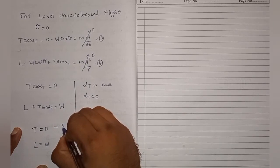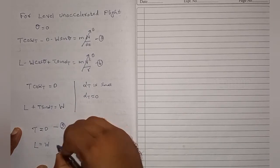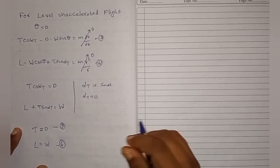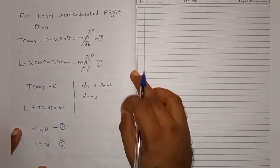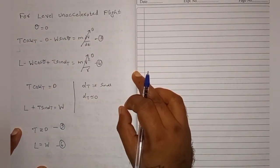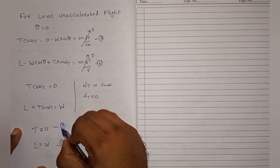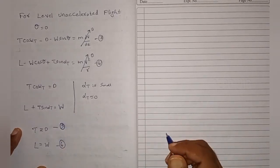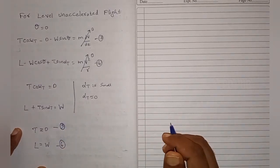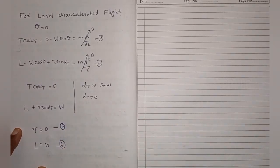These are equation number five (T = D) and equation number six (L = W) — the equations of motion for level unaccelerated flight. We will next discuss thrust required and power required. Thank you for listening, take care.